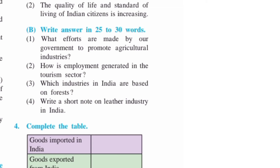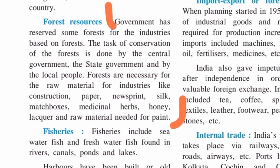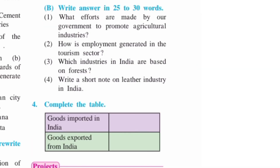Question number three: Which industries in India are based on forest? On page number 45, write from 'Government has reserved some forests for the industries based on forest' up to 'needed for paint.' Write it point-wise with highlights.